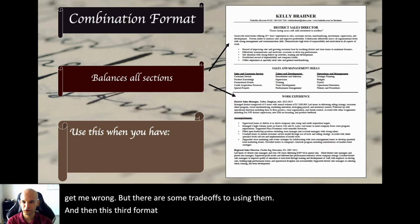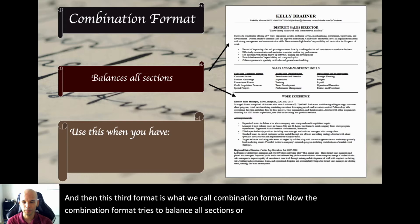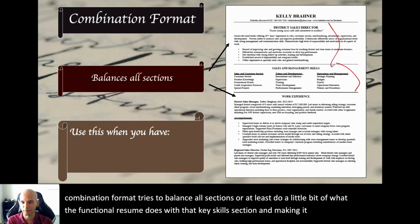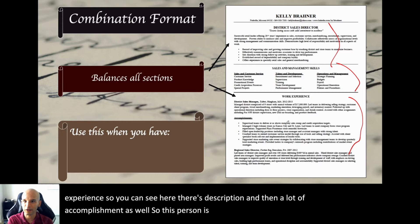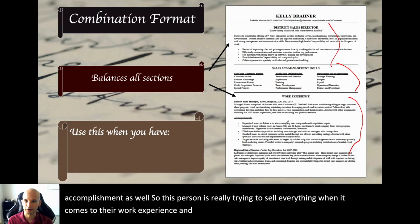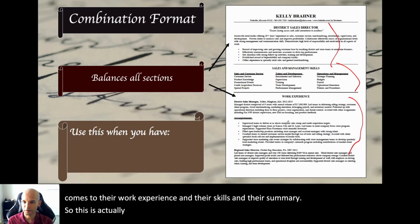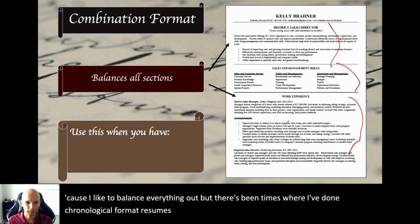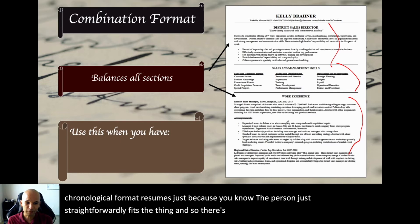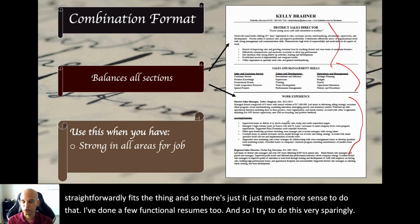The third format is what we call combination format. The combination format tries to balance all sections — doing a little of what the functional resume does with a key skills section and being heavy on summary, but still putting a lot of oomph into work experience. You can see there's description and a lot of accomplishments as well. This is actually the most recommended format among resume writers. If I'm writing a resume for somebody, I'm looking to do combination format if I can, because I like to balance everything out.